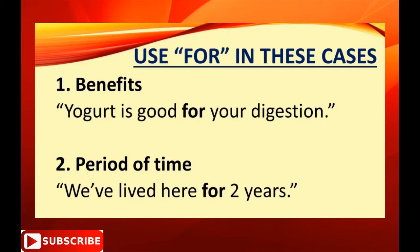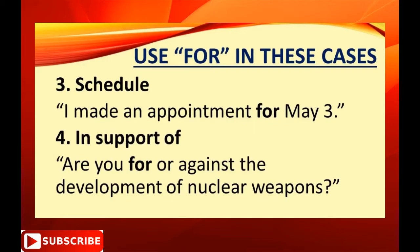Use 'for' when talking about a period of time — for example, 'We've lived here for two years.' You can also use 'for' when talking about scheduling — for example, 'I made an appointment for May 3rd.' 'For' can also express being in support of something — for example, 'Are you for or against the development of nuclear weapons?'